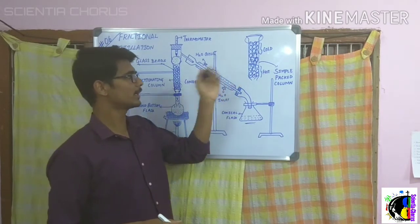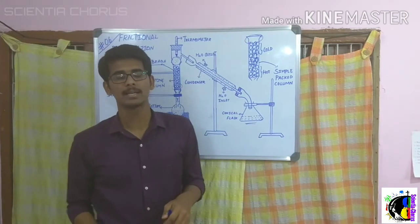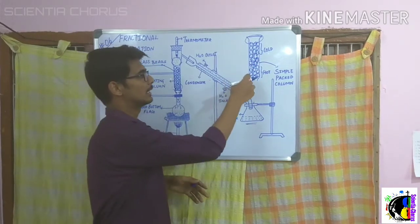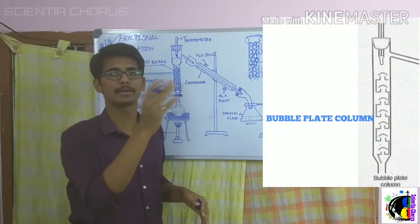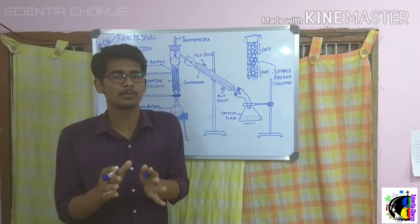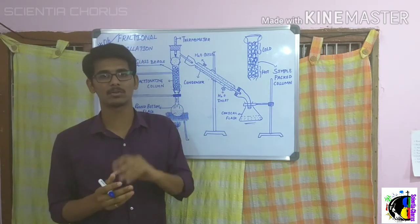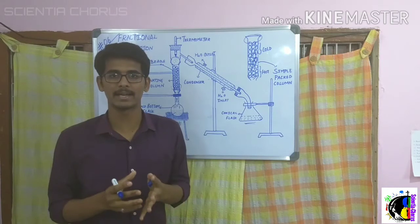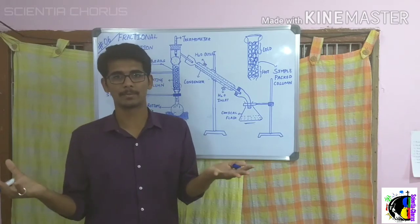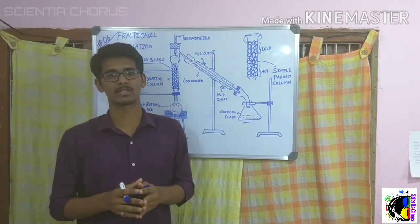Regarding the fractionating column, it is not always necessary to use glass beads — there are different ways to use it, such as using plates to separate the components of a mixture. The key function of the fractionating column is to provide a surface area where heat exchange takes place between the condensed liquid and the ascending vapor. This is all about fractional distillation.